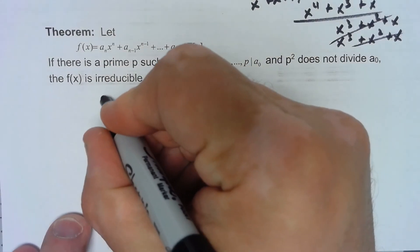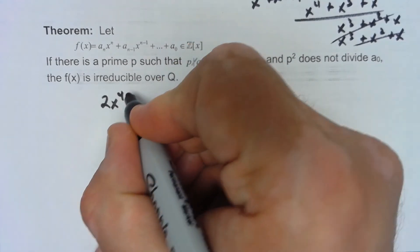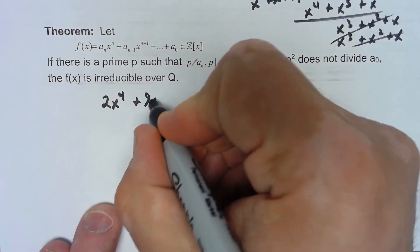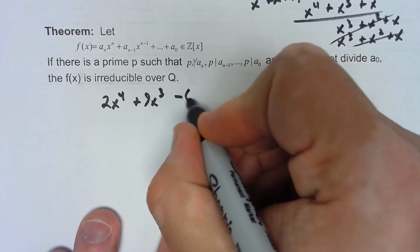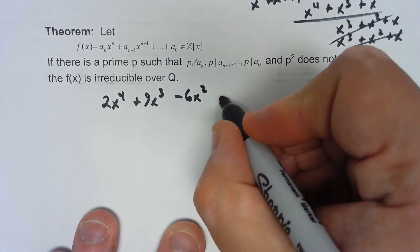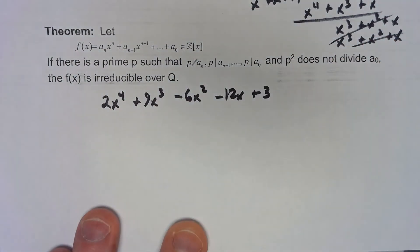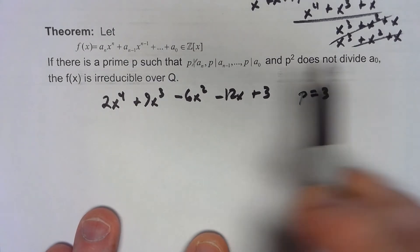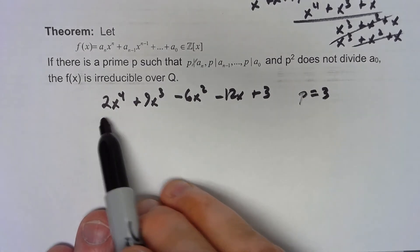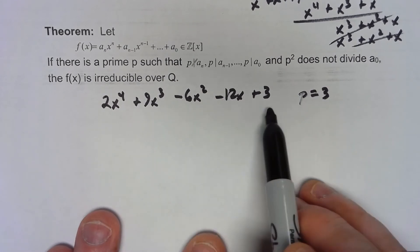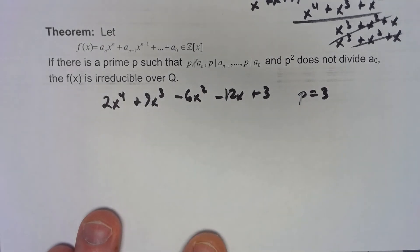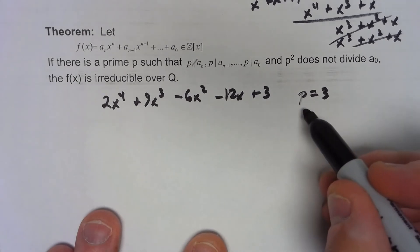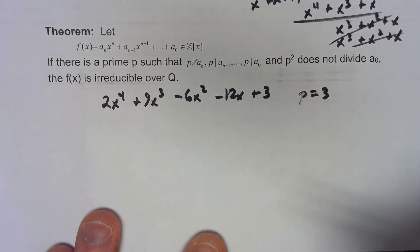So how does that work? Say I've got something like 2x⁴ + 9x³ - 6x² - 12x + 3. If I take p equals 3, p does not divide into 2, p does divide into 9, 6, 12, and 3, but p² = 9 doesn't divide into 3. It's that simple. This polynomial must be irreducible over Q.